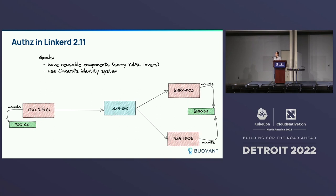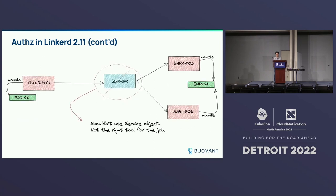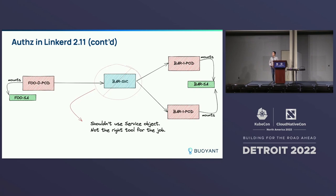One of the guiding principles of Linkerd is to minimize configuration and make it easy to use. But there are places where you really do need user input to decide what the behavior should be. We can't automatically determine who should be allowed to talk to whom — that has to be configured because only the people operating the cluster know what that behavior is supposed to be. A natural place to put that configuration would be on the service. We think: I want to restrict access to this service to only certain identities, so attaching authorization policy onto a service seems natural.